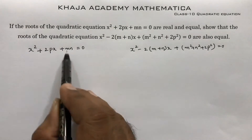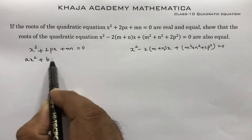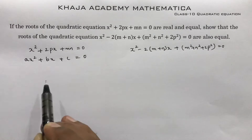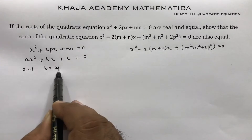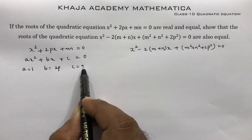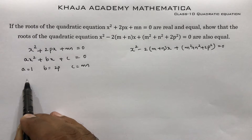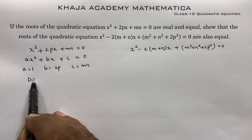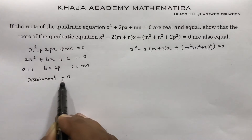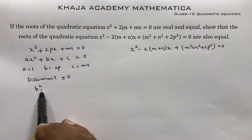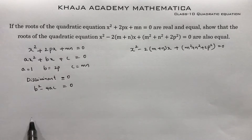Since the roots of the first equation are equal, we compare with the standard equation ax² + bx + c = 0. Here a = 1, b = 2p, c = mn. For equal roots, the discriminant is 0: b² - 4ac = 0.